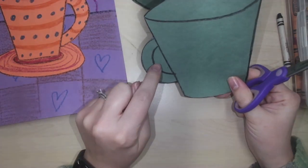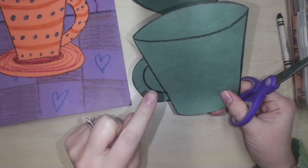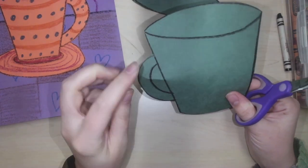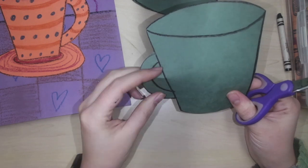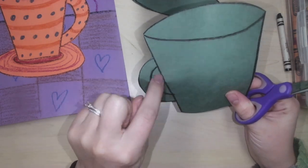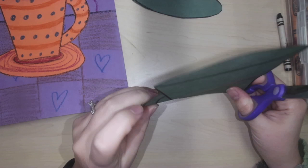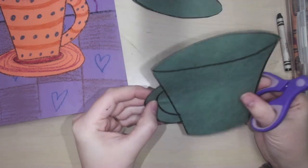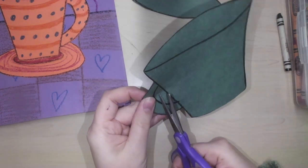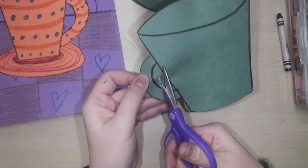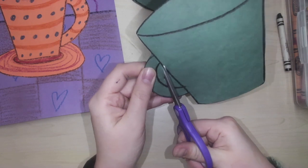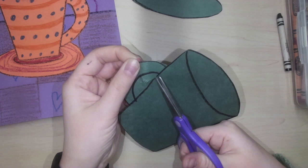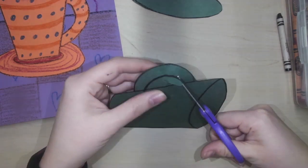Now, how can we cut out the inside of our mug's handle? There's a neat trick. If we fold our paper, so we create a crease on the handle in that inside oval, then I can cut on the fold. And now I've made a hole I can put my scissors in. Now that my scissors are in the hole, I can carefully cut out the inside part of my handle.